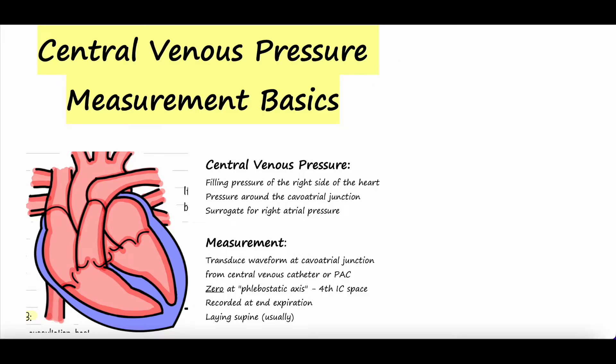We're going to talk about what CVP or central venous pressure is, how to measure it, how not to measure it, the phlebostatic axis, zeroing, what normal values are, what they mean, and so on.